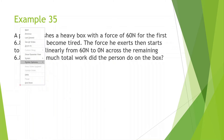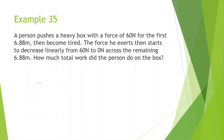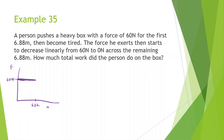This one's a bit more tricky. A person pushes a heavy box with a force of 60 newtons for 6.88 meters, then becomes tired. The force he exerts starts to decrease linearly from 60 newtons to 0 newtons across the remaining 6.88 meters, reaching 13.76 meters total. I like to think about it as a graph — force on one axis, position on the other — where the force is constant for 6.88m, then decreases linearly to 0.